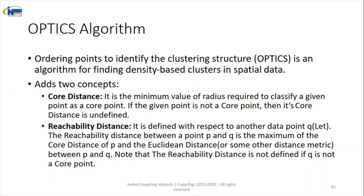The thirty-fourth algorithm is OPTICS — Ordering Points To Identify the Clustering Structure — a variant of density-based clustering. Two additional concepts are introduced: core distance (the minimum radius required to classify a point as a core point) and reachability distance (the maximum of the core distance of point P and the Euclidean distance between P and Q). These two concepts are added on top of the DBSCAN framework.